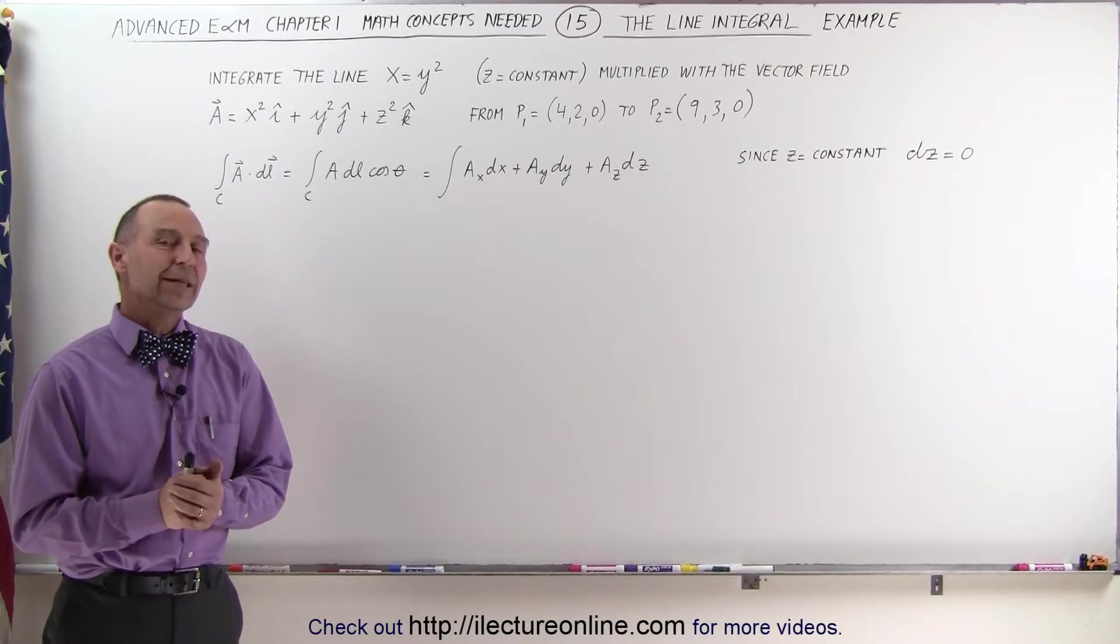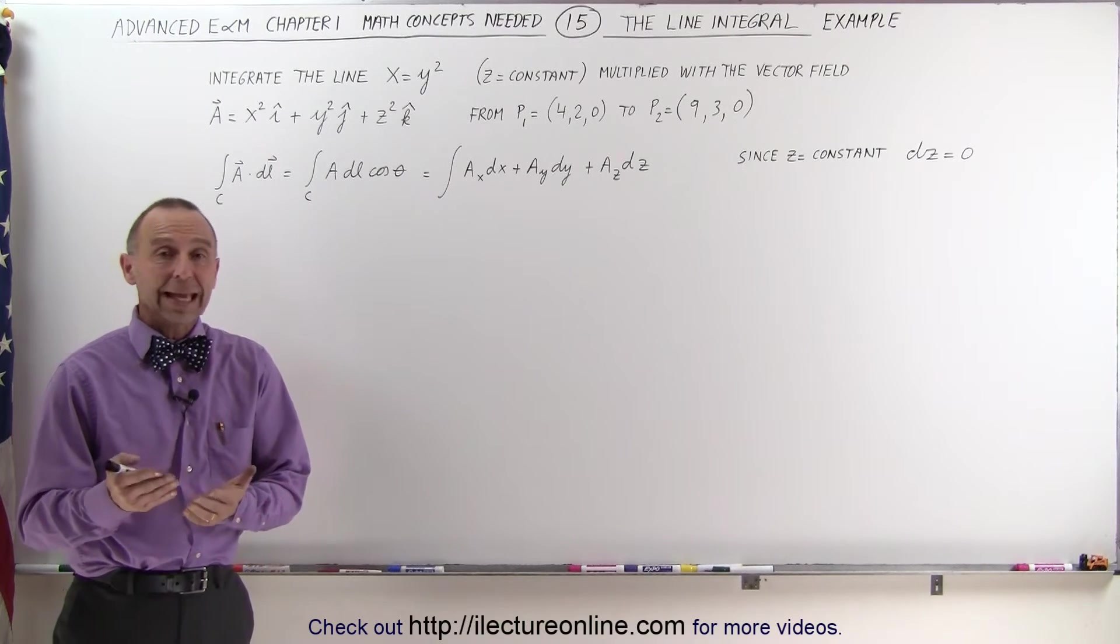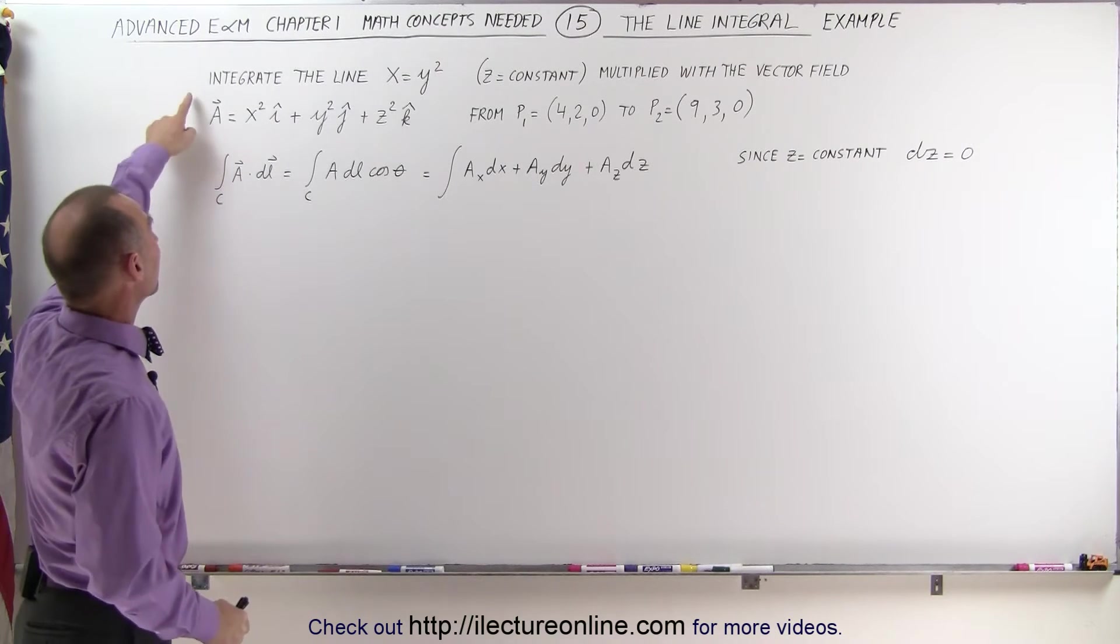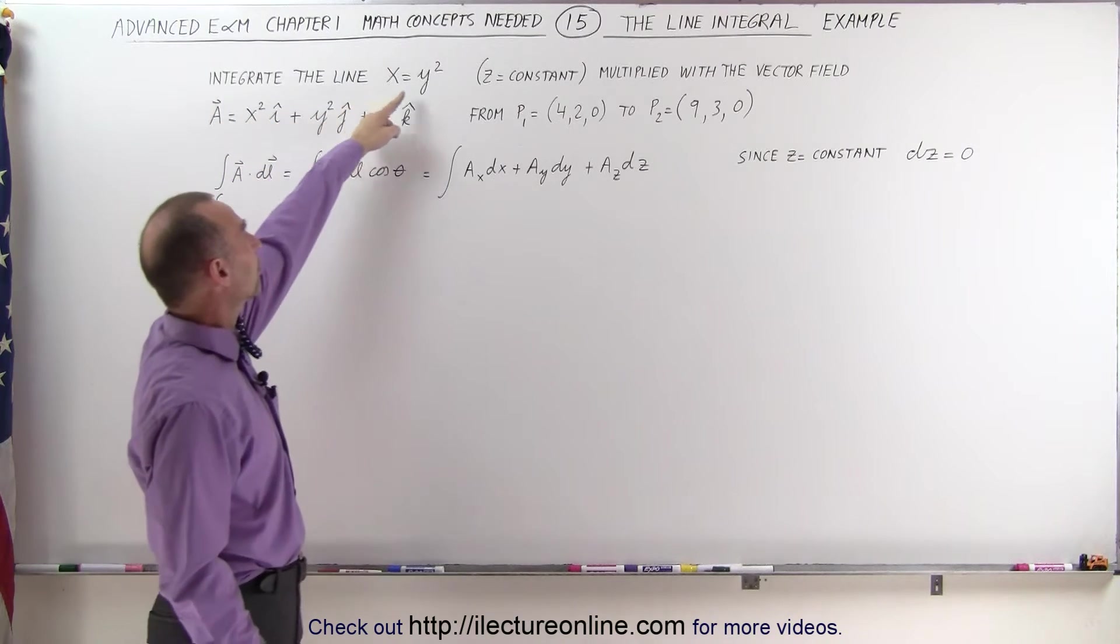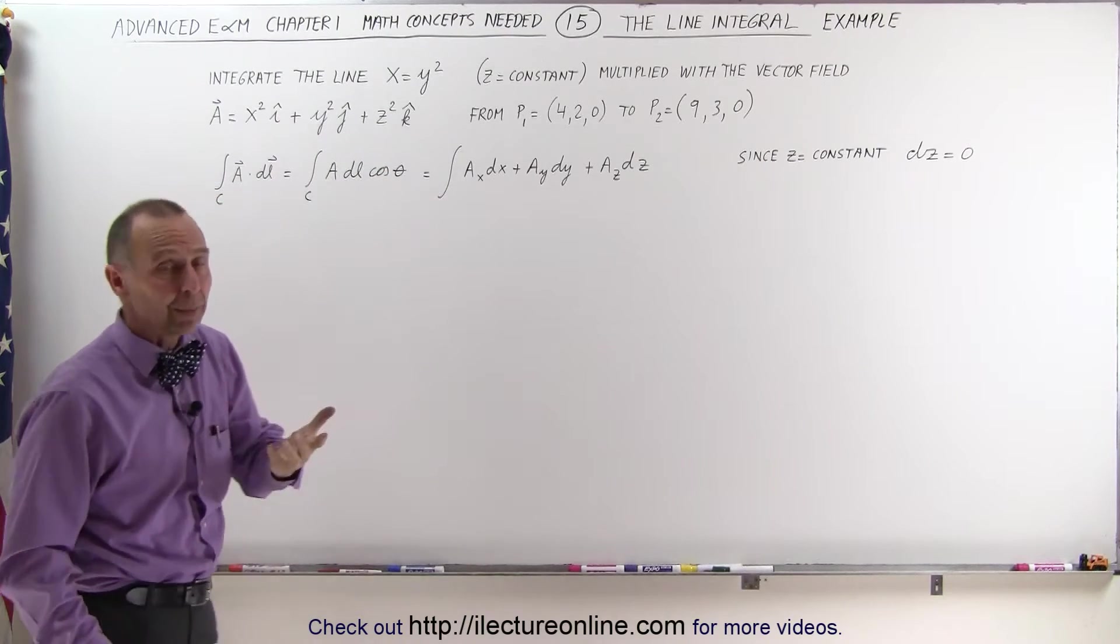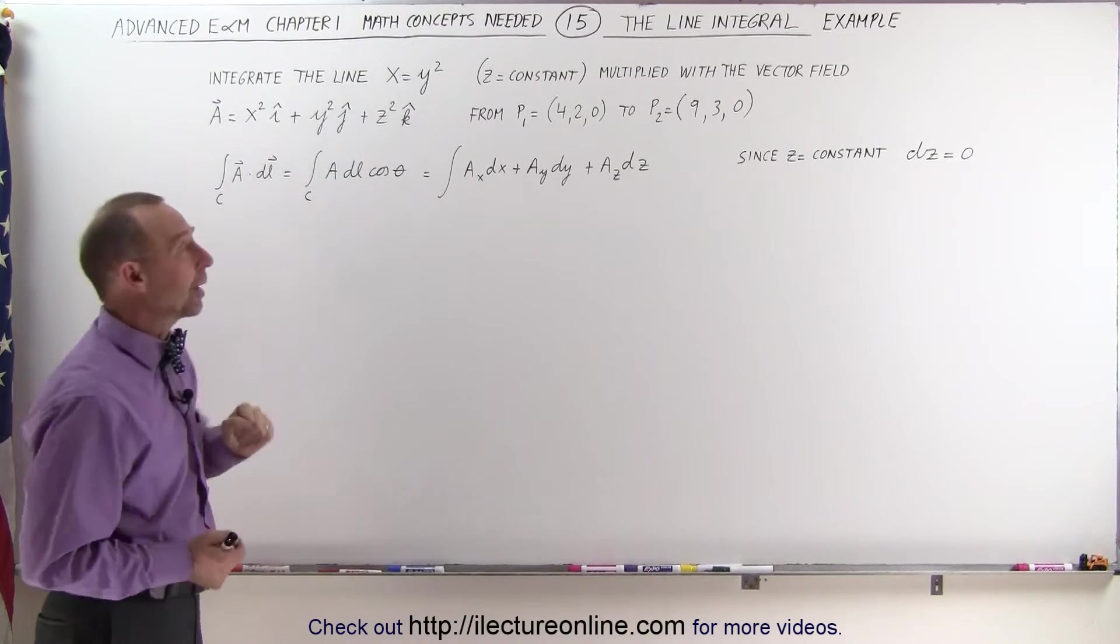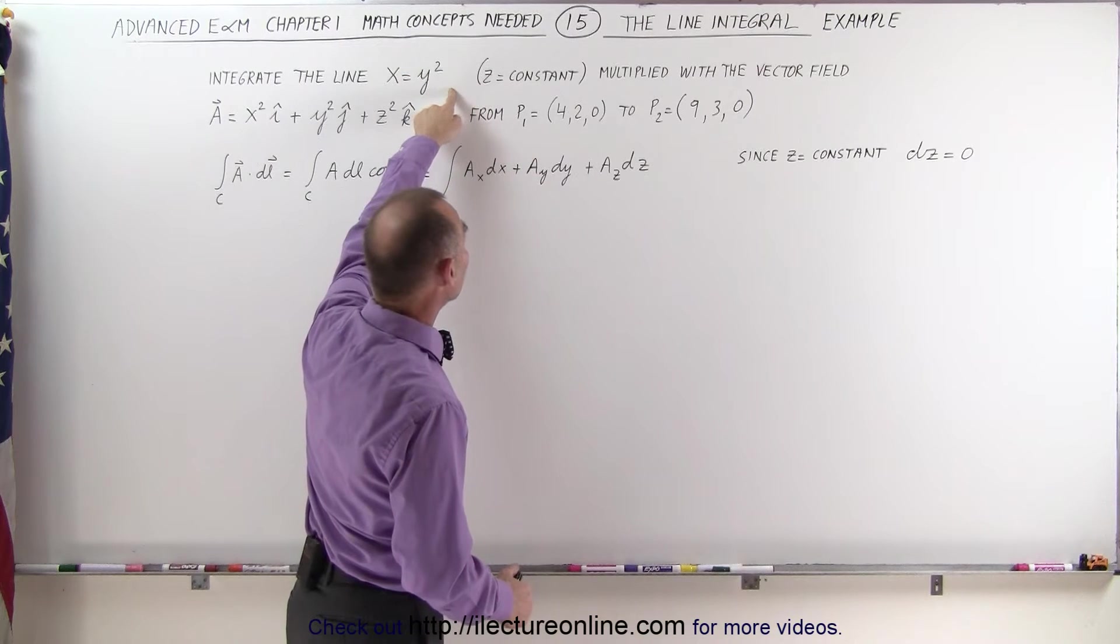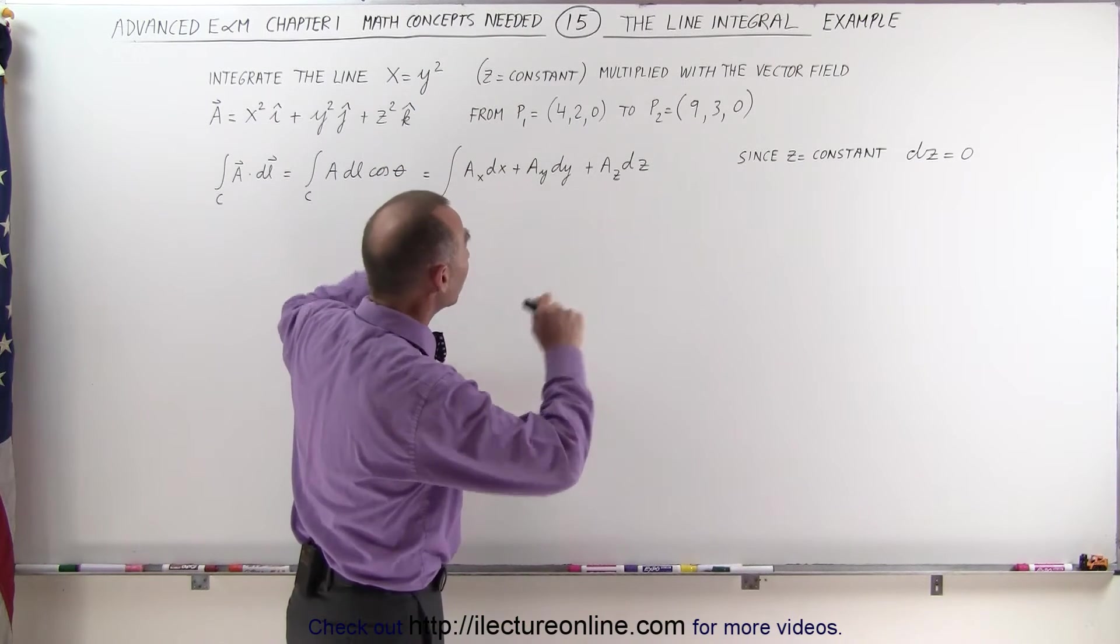Welcome to our lecture online. Here's an example of how to integrate a line integral with a vector field. The line is represented by the equation x equals y squared, so that's like a parabola, a sideways parabola. Notice that z is constant, so it's only in a two-dimensional plane.